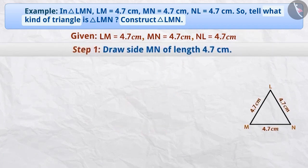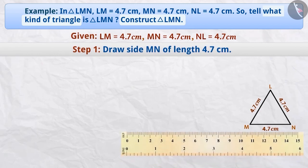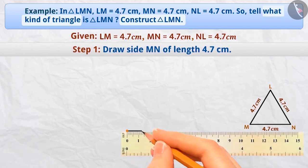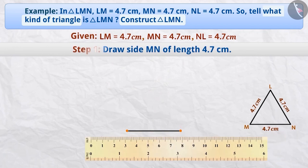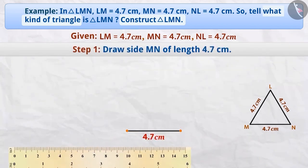Step 1: First of all, with the help of a scale, we will draw a line segment of length 4.7 cm. We will name the line segment as MN.